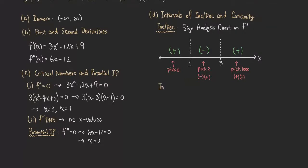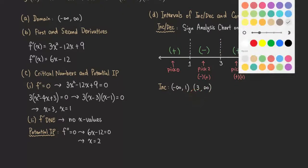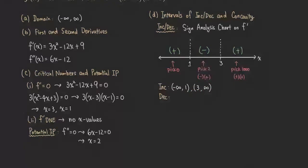The function is increasing on the intervals from negative infinity to 1, and from 3 to positive infinity. The function is decreasing on the interval from 1 to 3. Now the next step is to determine the intervals of concavity.